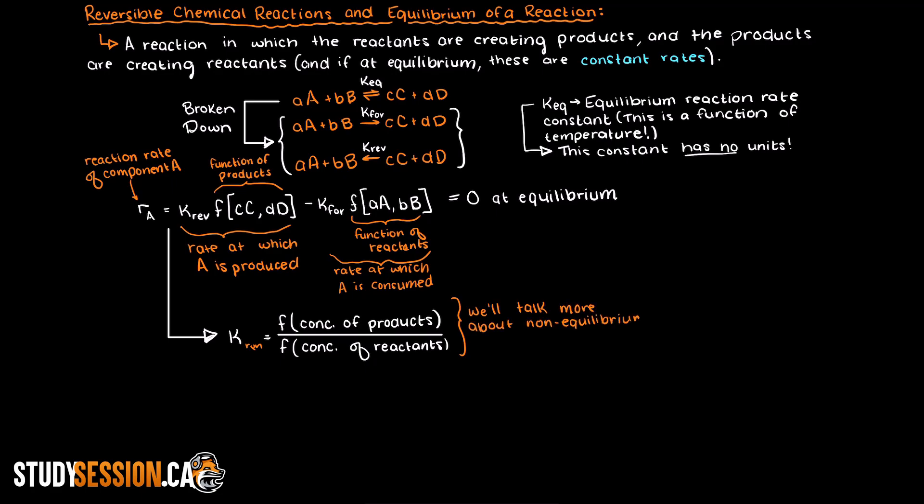But specifically for reactions at equilibrium we can use what is called the law of mass action. This relates the amount of each species we have within our system at equilibrium. This is what the law of mass action looks like. We have the concentrations of our products raised to their stoichiometric coefficients divided by the concentrations of our reactants raised to their stoichiometric coefficients.